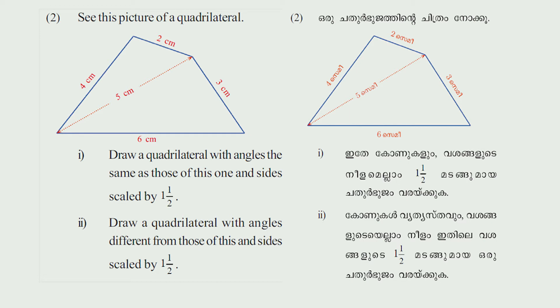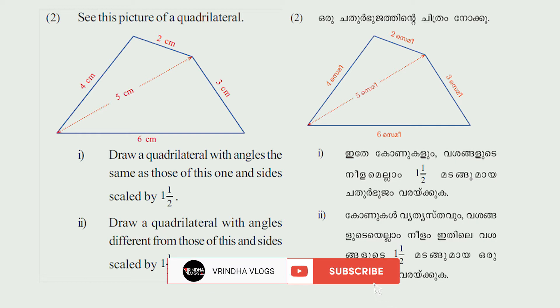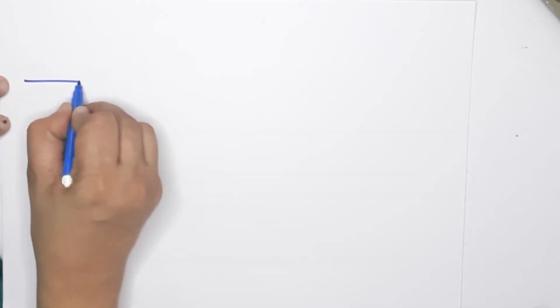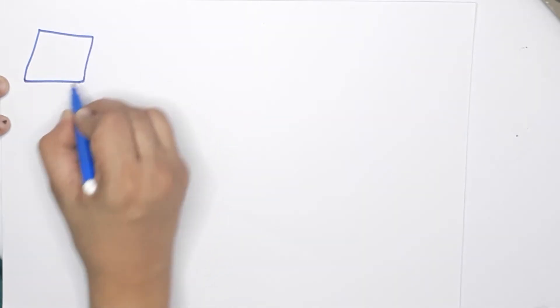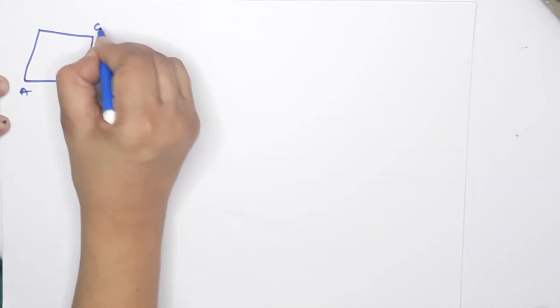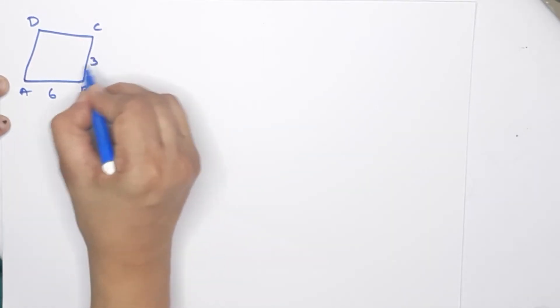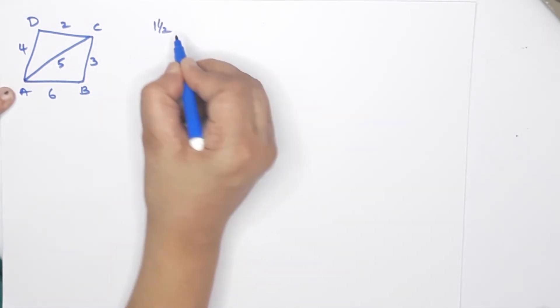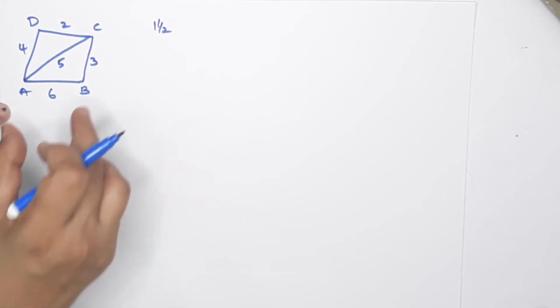Next question: See this picture of a quadrilateral. First question — draw a quadrilateral with angles the same as those of this one and sides scaled by 1 and a half. Second question — draw a quadrilateral with angles different from those of this one and sides scaled by 1 and a half. The original quadrilateral ABCD has sides: AB is 6 cm, BC is 3 cm, AC is 5 cm, AD is 4 cm, CD is 2 cm. This length is scaled by 1 and a half times.